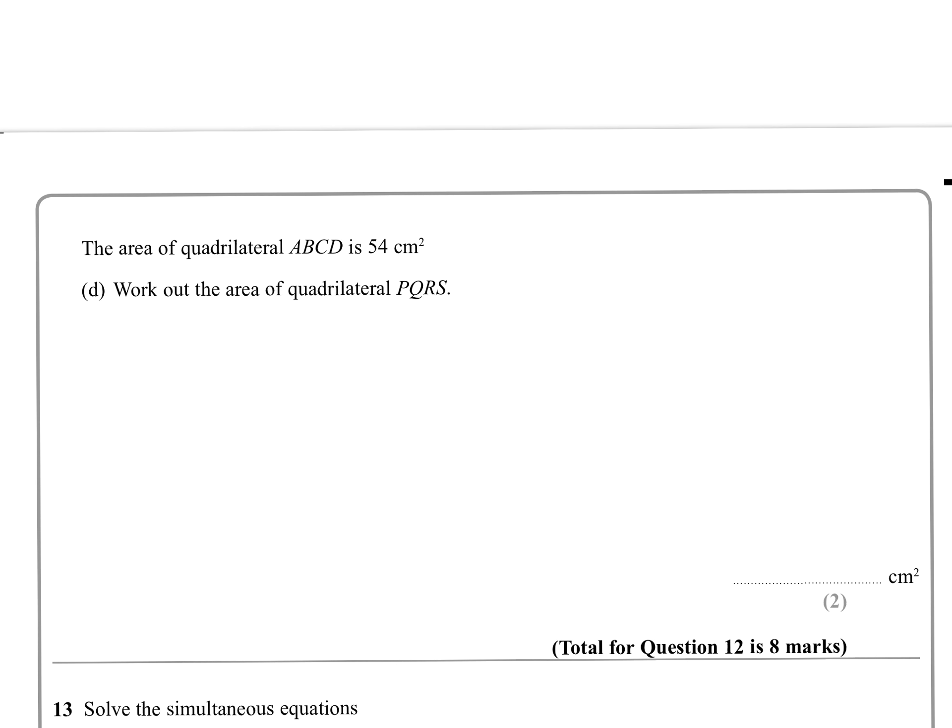Okay. The area of this quadrilateral is 54. Work out the area of the quadrilateral PQRS. Well, it's 2.5 times bigger. But that doesn't mean the area is going to be 2.5 times bigger. The area is 2.5 squared times bigger. If it had been volume, it would have been 2.5 cubed. Let me type that in. And we get 337.5 centimeters squared.